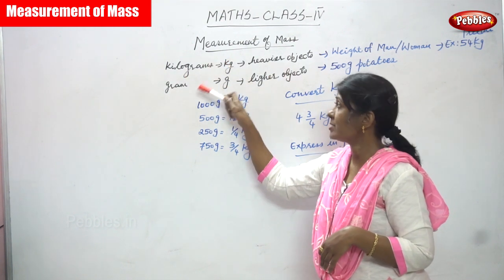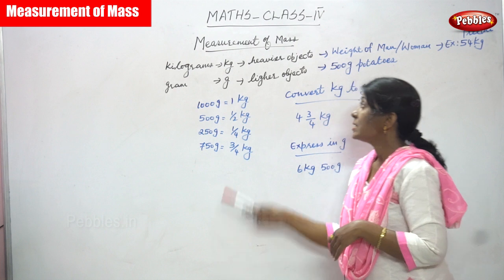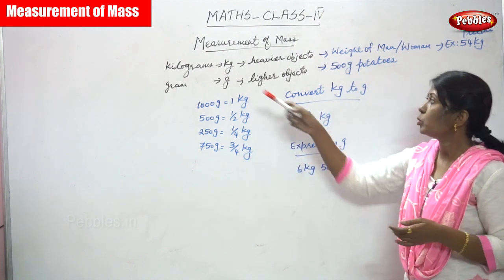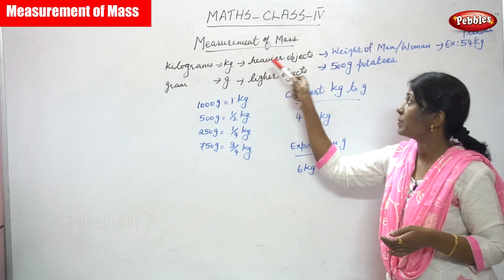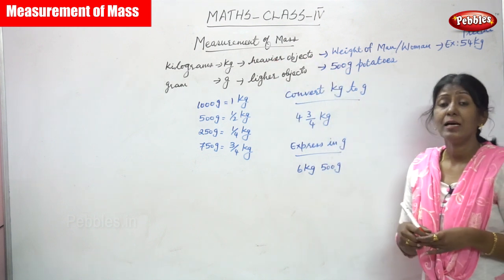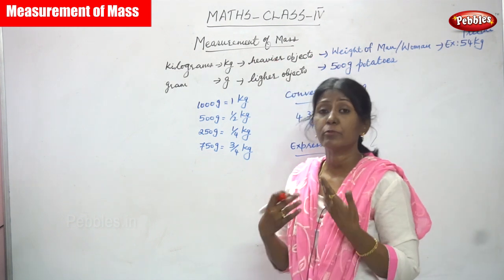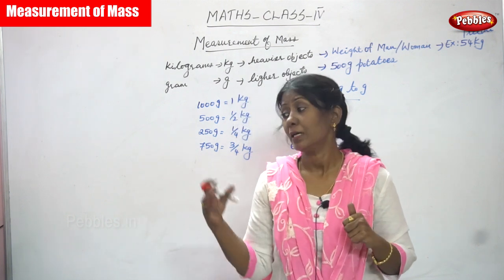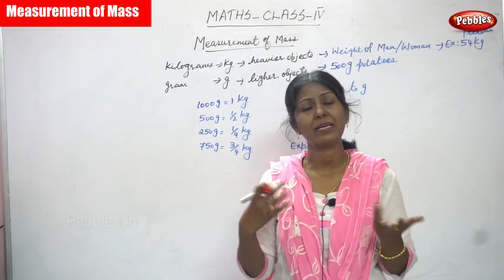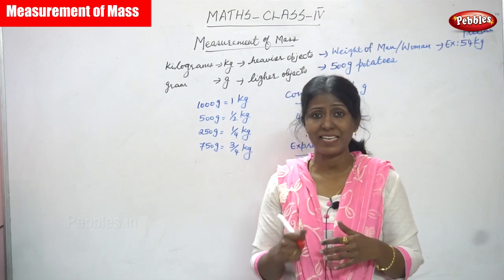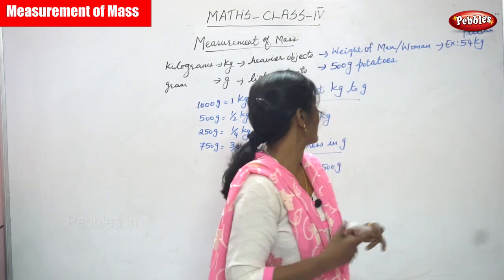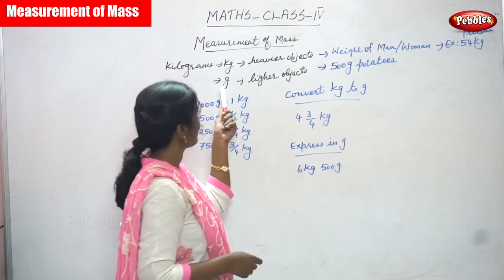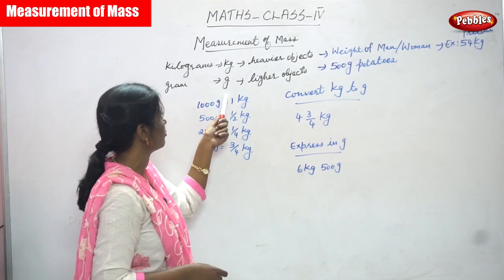Kilogram is the short form kg and gram is the short form g. If you measure any heavier object, you have to use kilograms. For example: the weight of a man, weight of a human, weight of a table, weight of a chair, weight of a fridge or TV — whatever it is, it comes under kilograms.